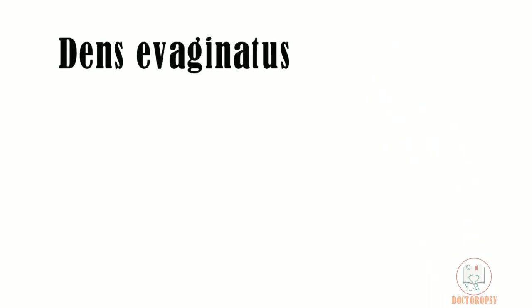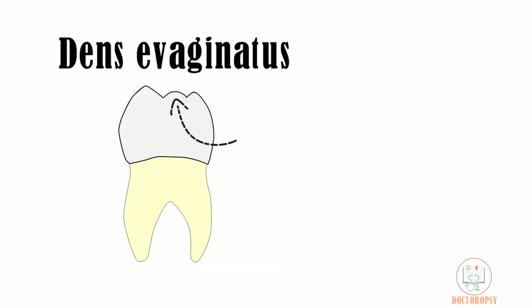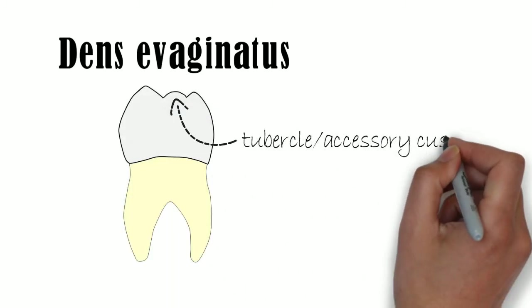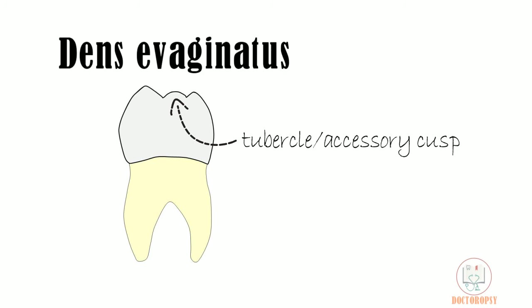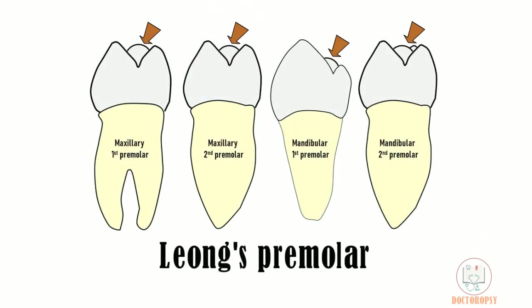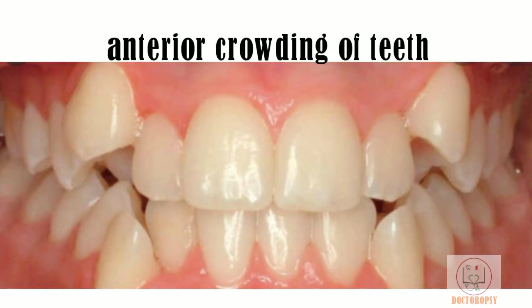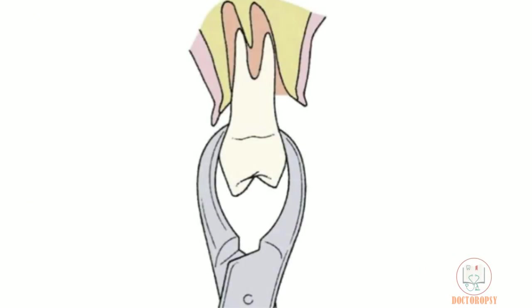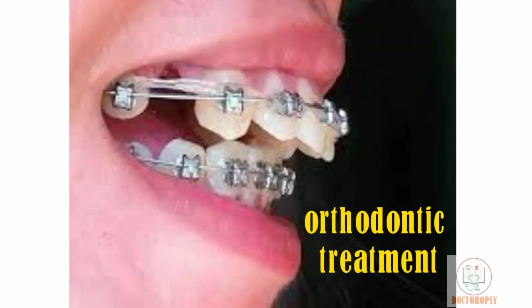For clinical considerations: dens evaginatus is a developmental anomaly where an extra tubercle is seen between the buccal and lingual cusp, commonly seen in premolars and also known as Leong's premolar. In cases of anterior crowding, the maxillary first premolar is the most commonly extracted tooth to create space in the maxillary arch for orthodontic treatment.